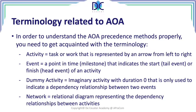What is a network? The network is the relational diagram representing the dependency relationship between the different activities. When we put all the activities together — they have start or tail events and finish or head events — they are linked and follow a certain precedence. When we put all of these elements together, we find this relational diagram, which is the network diagram.